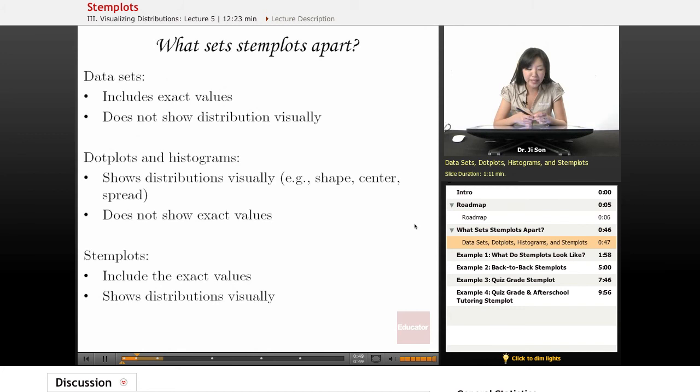So what sets stem plots apart? Let's think about this. When we look at data sets, those rows and rows of data, they include the exact values, but it doesn't show us the distribution visually. It's almost impossible to actually see the distribution. The nice thing about dot plots and histograms is that it shows you the distribution visually. You could see the shape, you could sort of see the center and the spread, how spread out it is.